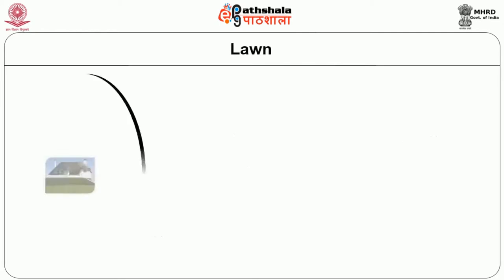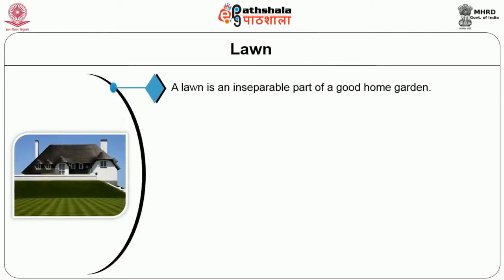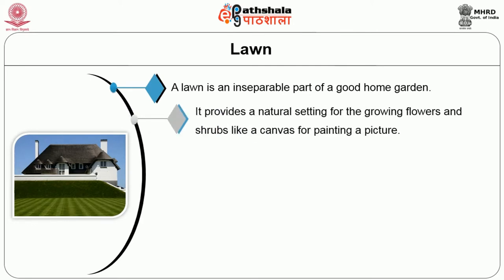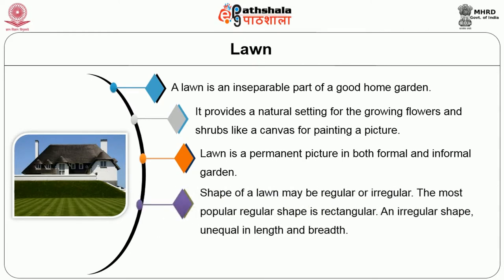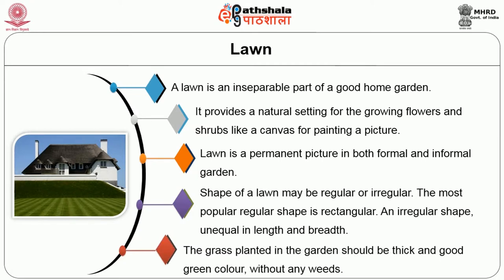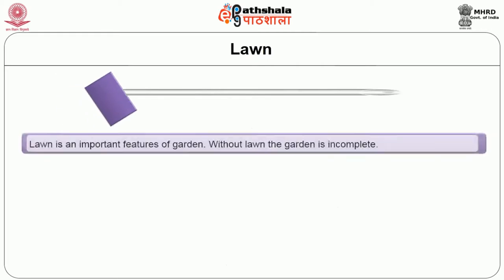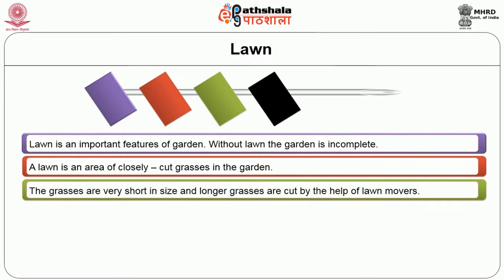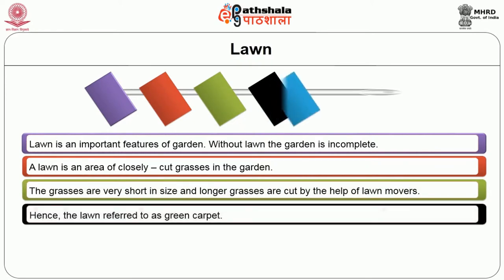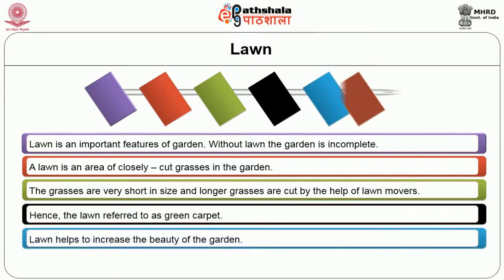The first feature is the lawn. A lawn is the inseparable part of a good home garden. It provides a natural setting for growing flowers and shrubs like a canvas for painting a picture. Lawn is a permanent feature in both formal and informal gardens. The shape of the lawn may be regular or irregular — the most popular regular shape is rectangular and irregular shape unequal in length and breadth. The grass planted in the garden should be thick and good green color without any weeds. Without lawn, the garden is incomplete. A lawn is an area of closely cut grasses. The grasses are very short and longer grasses are cut by lawn mowers. Hence, the lawn is referred to as a green carpet.